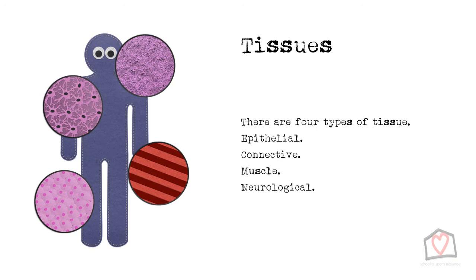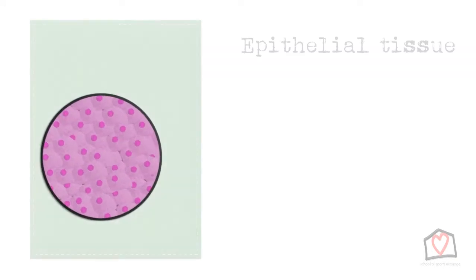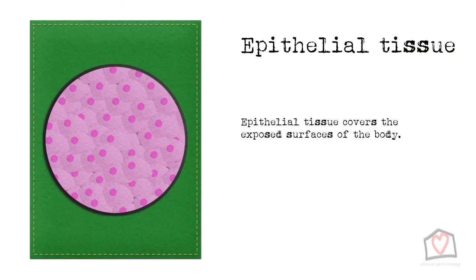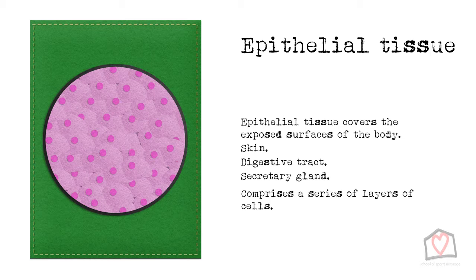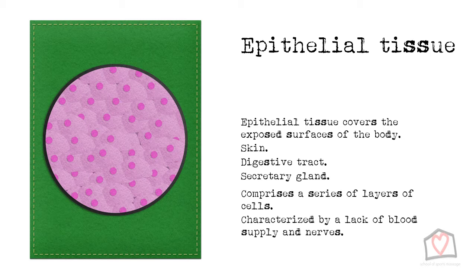As muscle and nervous tissue are particularly influenced by massage therapy, they will be covered in their own sections in more detail later on. Epithelial tissue is a specialised tissue that covers all the exposed surfaces of the body, most notably the skin, but also the digestive tract and secretory glands. It comprises a series of layers of varied shaped cells, but is also characterised by a lack of blood supply and nerves, meaning that they get their nutrients and sensation from the layers below.